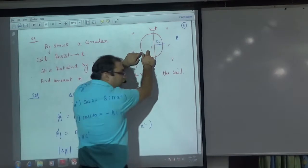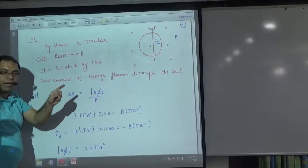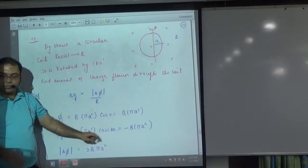So first, I think there is B vector inside, area vector also inside. But when the coil is rotated 180 degrees, the area vector is outside. What is the angle? 180. B and the area is 180.